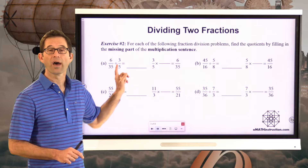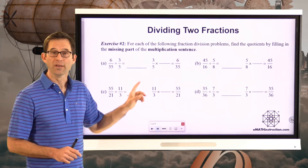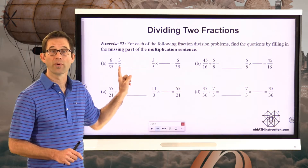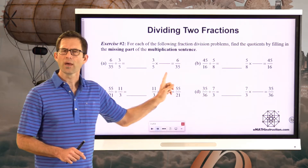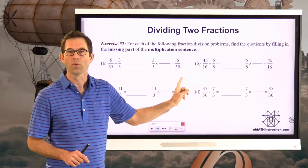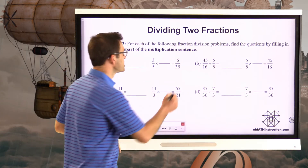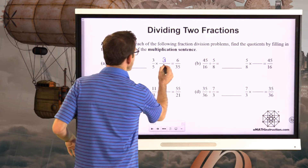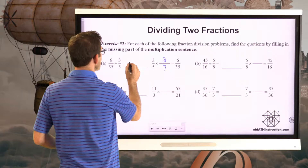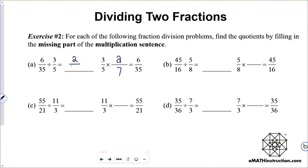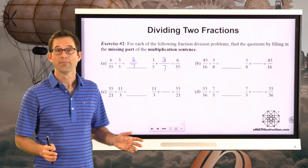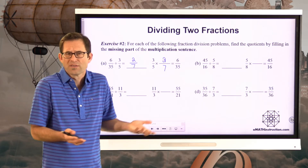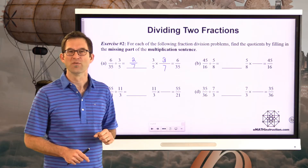For each of the following fraction division problems, find the quotients by filling in the missing part of the multiplication sentence. In letter A, we have 6 thirty-fifths divided by three-fifths. Whatever the quotient is, it's the number we have to multiply by 3 fifths to get 6 thirty-fifths. So thinking: three-fifths times what equals 6 thirty-fifths? Well, 3 times 2 is 6, and 5 times 7 is 35. Therefore, 6 thirty-fifths divided by three-fifths must be two-sevenths, because three-fifths times two-sevenths is 6 thirty-fifths.